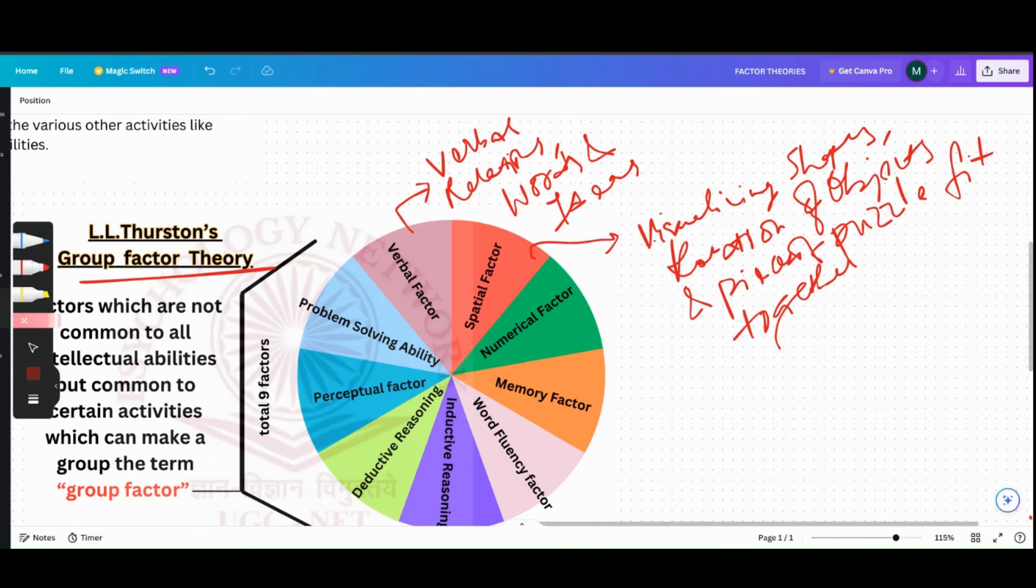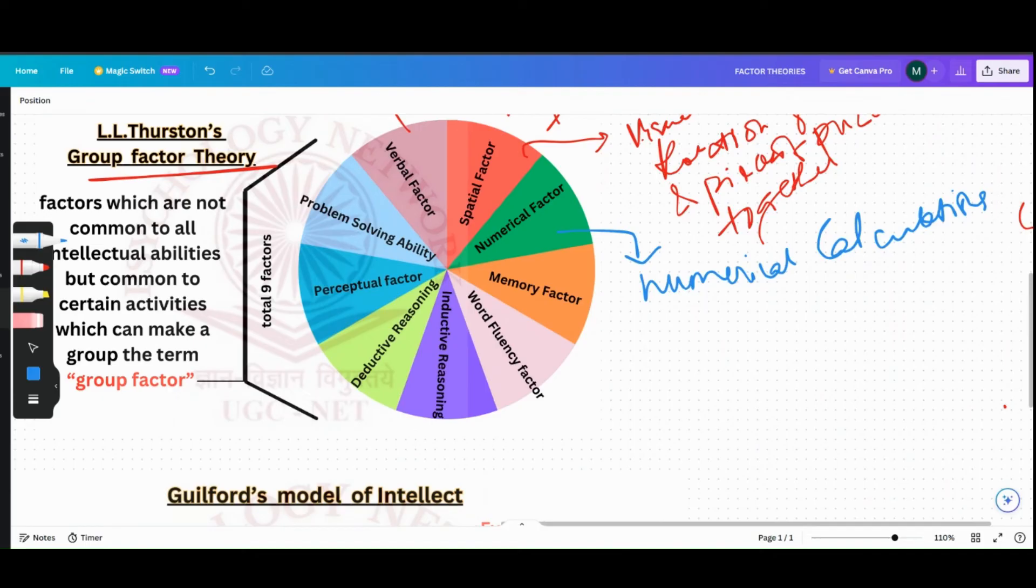Then you have the Numerical Factor. So the Numerical Factor is ability to do numerical calculations rapidly and accurately. Coming to the Memory Factor: Memory Factor is ability to memorize quickly.